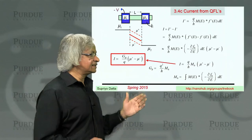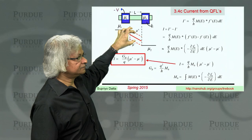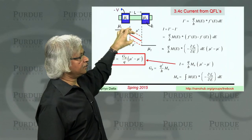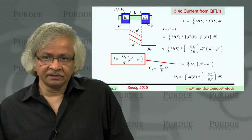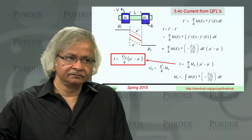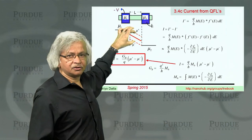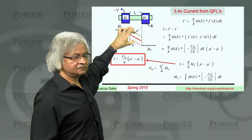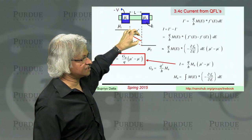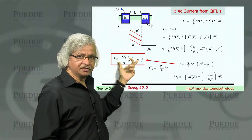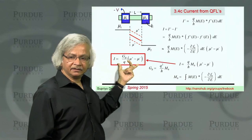That gives you: current equals q over h times this part integrated over energy — that's what you call M zero — times mu plus minus mu minus. And this is the ballistic conductance. So the net current is the ballistic conductance times the separation of quasi-Fermi levels. Note that this holds at any point. That is, if you look here, the current would be that; if you look somewhere else, the current would be the same. The continuity equation requires that the current be the same everywhere, which immediately tells you that the separation of quasi-Fermi levels must also be the same everywhere. As you can see, these are straight lines, they are parallel — there's a difference but the difference is the same everywhere.